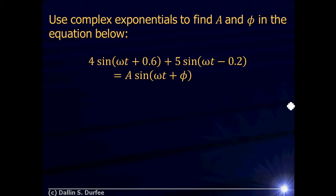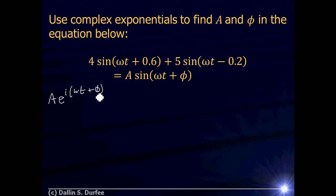This is really tricky to do using trig identities, but it's not too bad if we use complex exponentials. So I'm going to first write a complex exponential version of this equation. I'll start by writing the left side as A times e to the i(omega t + phi). This is not equal to that, but the imaginary part of this is equal to that. So I'm going to write this equation knowing that in the end I'm just taking the imaginary part.